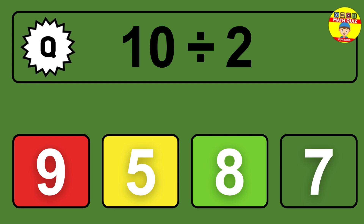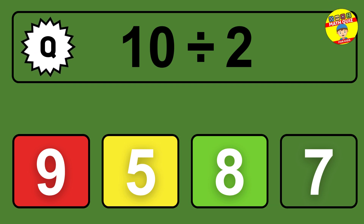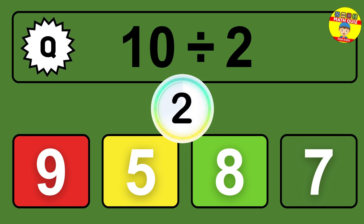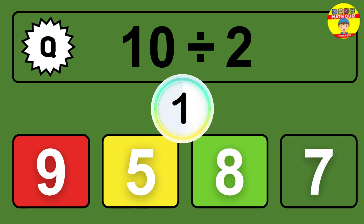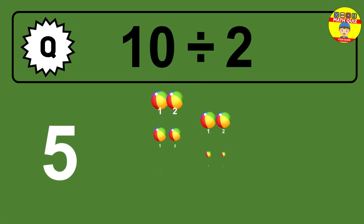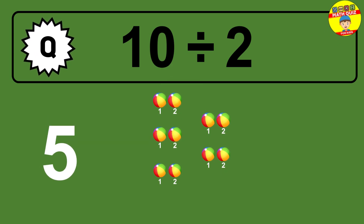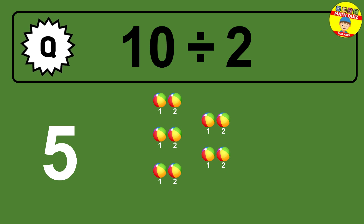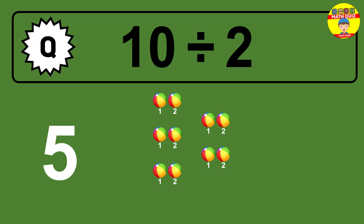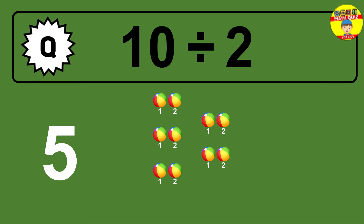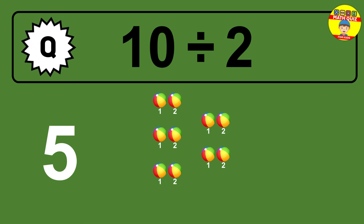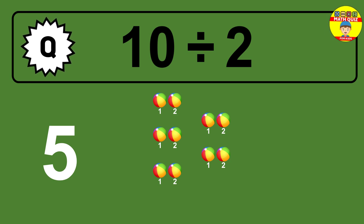What is 10 divided by 2? Picture this: you have 10 objects to divide into groups of 2. How many groups can you make? Let's think about it. Ready to find out? Let's break it down. Imagine you have 10 objects — now think about splitting them equally into smaller groups of 2.